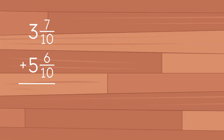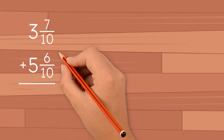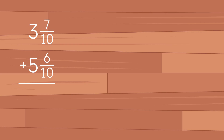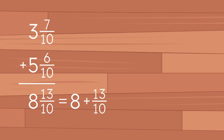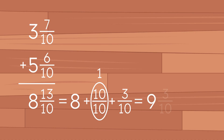Let's try another one: 3 and 7 tenths plus 5 and 6 tenths. First we add the fractional part. 7 tenths plus 6 tenths gives us 13 tenths. Now we add the whole numbers. 3 plus 5 gives us 8, so we have 8 and 13 tenths. 13 tenths is an improper fraction — we can rewrite it as 10 tenths plus 3 tenths. We know that 10 tenths is the same as 1. Now we add the whole numbers: 8 plus 1 gives us 9. So the final answer is 9 and 3 tenths.